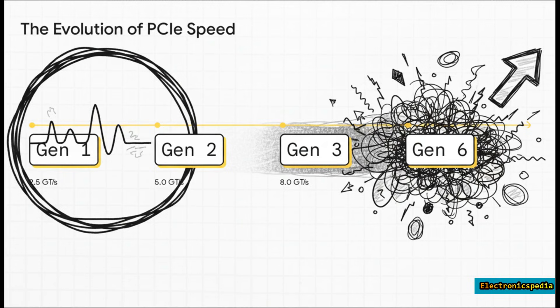You can see how much worse this problem has gotten over time. Back in 2003 with PCIe Gen 1, we were sending signals at 2.5 gigatransfers per second. That was challenging, but manageable. Fast forward to today, and we're at 64 GT per second. That's a more than 25-fold increase in speed, which means the problem of ISI isn't just 25 times harder, it's exponentially harder to solve.